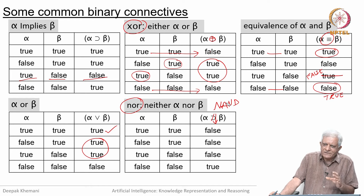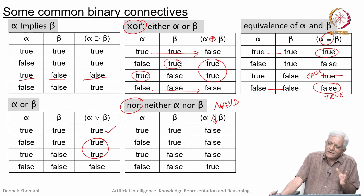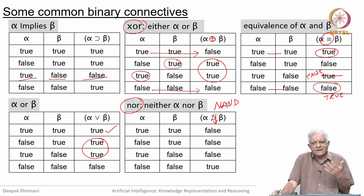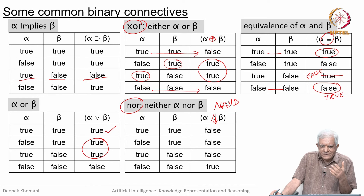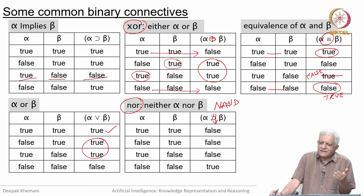We talked about the notion of completeness of connectives. When we meet next, we will talk about the notion of completeness of rules of inference. We saw various rules: modus ponens, disjunctive syllogism, hypothetical syllogism, conjunction, addition, modus tollens, and so on. How many rules of inference do we need so that our logic machine is complete? The notion of completeness is that if a formula is entailed, then the machine should be able to prove or derive it. The answer can be quite interesting — we will take it up in the next video.